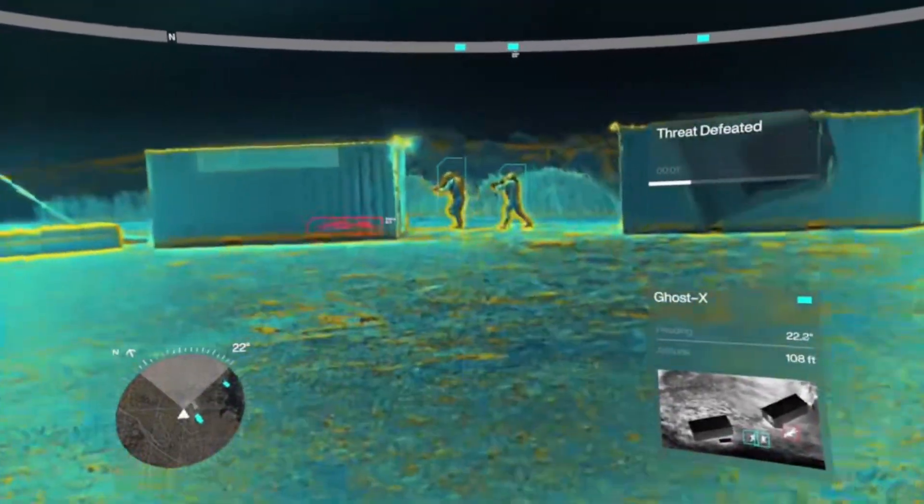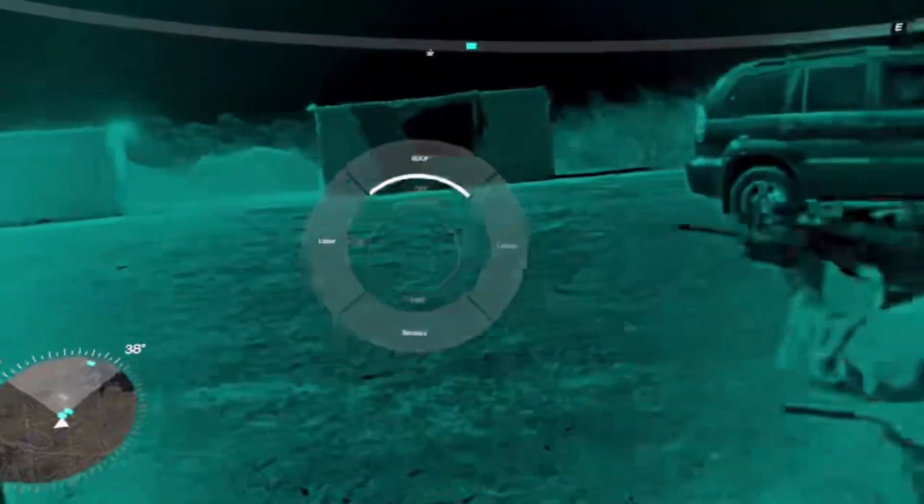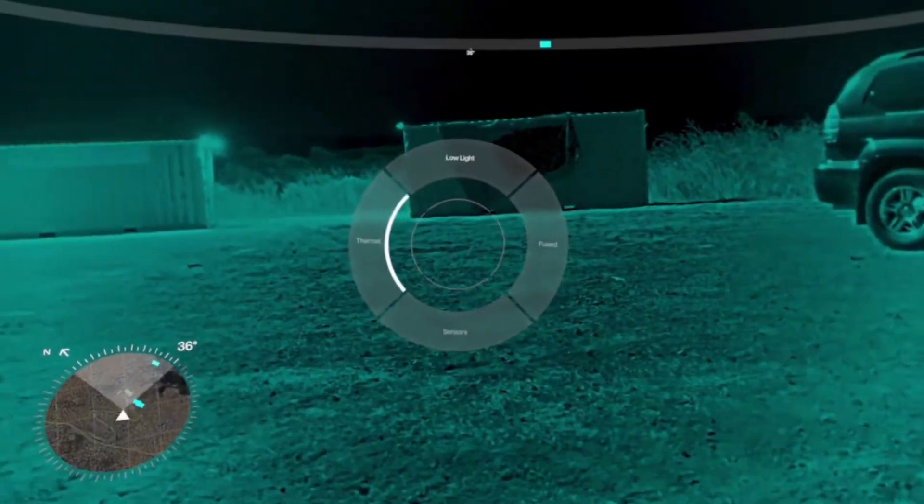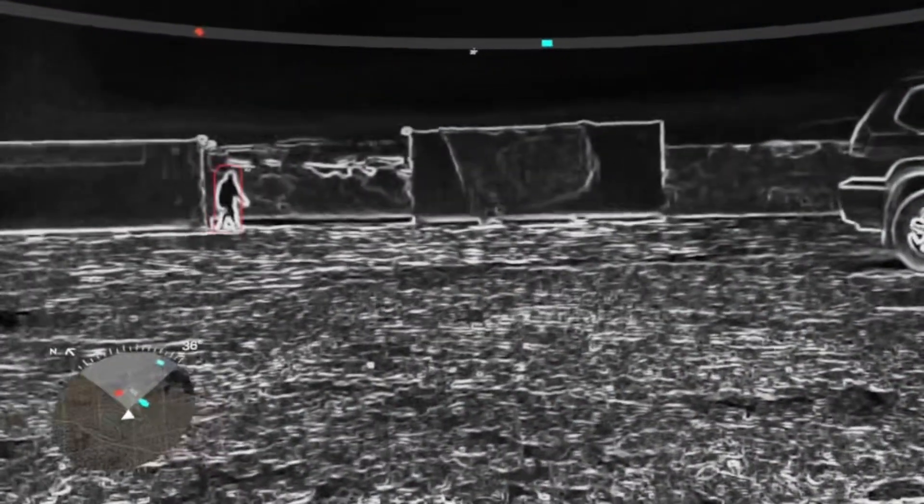So a soldier doesn't just see what's in front of them. They can spot allies around corners, track enemy movements through walls, and understand the entire battlefield like they're looking at a live map, but in the real world.